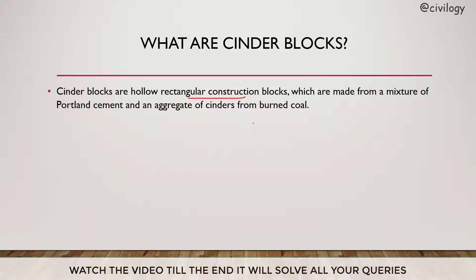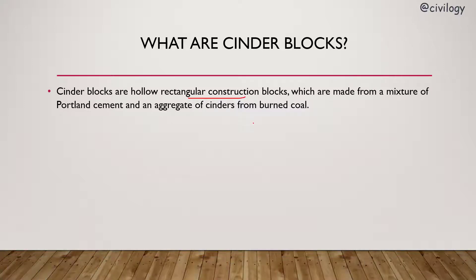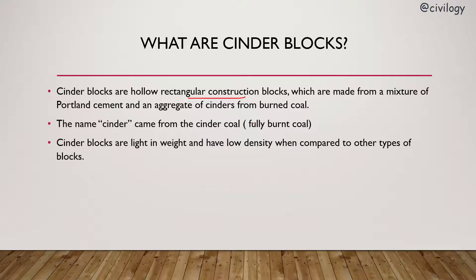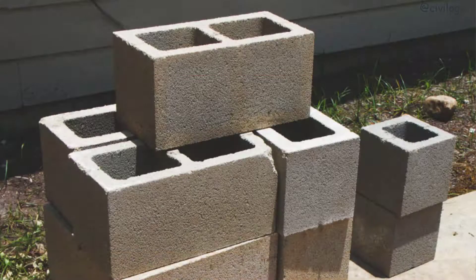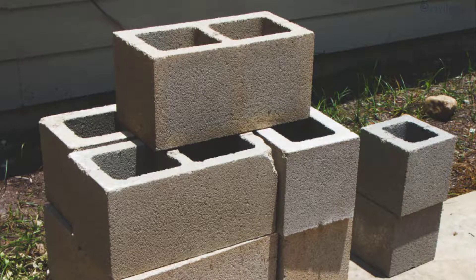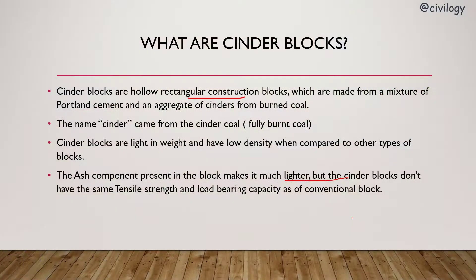Cinder blocks are made from a mixture of portland cement and an aggregate of cinder from burnt coal. The name cinder came from the cinder coal, which is fully burnt coal. These cinder blocks are light in weight and have low density compared to other types of blocks. The ash component present in the block makes it much lighter, but cinder blocks don't have the same tensile strength and load-bearing capacity as conventional blocks.